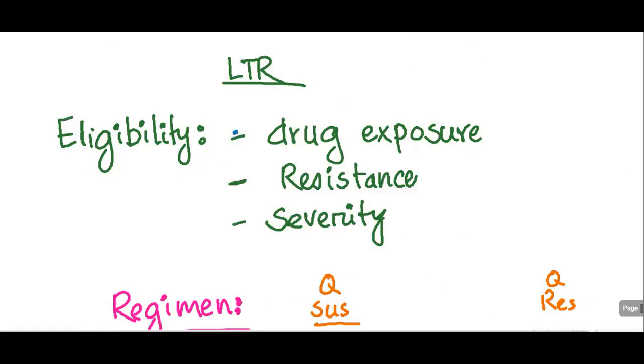Such as if the patient has drug exposure more than one month, if there is resistance such as resistance to quinolone or any other drugs other than INH used in the STR, if the disease is severe, severe pulmonary disease or severe extrapulmonary disease.